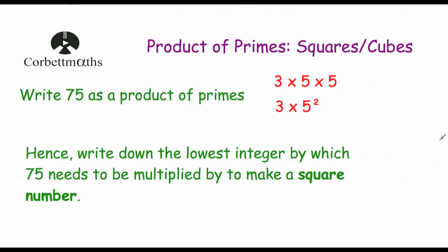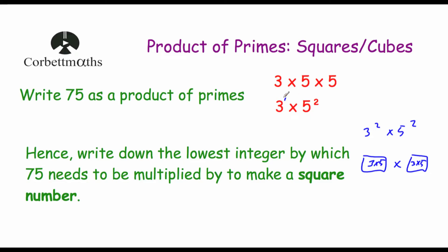So that's really useful. We had 75, which is 3 to the power of 1 times 5 squared. The 5 squared already has an even power. So we want to multiply 75 by 3 to make it 3 squared, because 3 squared times 5 squared, shared out equally, gives 3 times 5 and 3 times 5 — which is 15 times 15 equals 225. So if we multiply 75 by 3, all powers are even. The answer is 3.